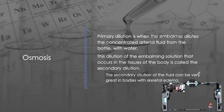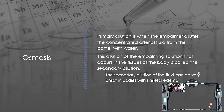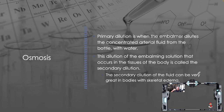Primary dilution occurs when the embalmer dilutes the concentrated arterial fluid from the bottle with water. Secondary dilution occurs in the body tissues when the body's fluids dilute the solution that has been injected. Secondary dilution can be very great in bodies with edema — if we're injecting a 2% solution into an edematous body, it is likely going to dilute down to 1% or even less, making it extremely ineffective. This is why you'd want to aim higher — 3.5 to 4% — so that when you put it in, that secondary dilution in a heavily edematous body will still provide the appropriate preservation because you've accounted for it.